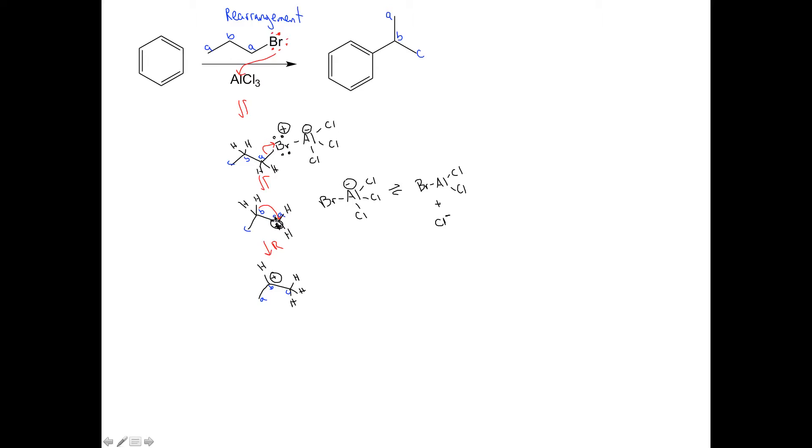So we've undergone this rearrangement. So we went from a primary carbocation to a secondary carbocation because that carbocation is much more stable. Now there's no other rearrangements that can occur. This is the most stable carbocation we can form.